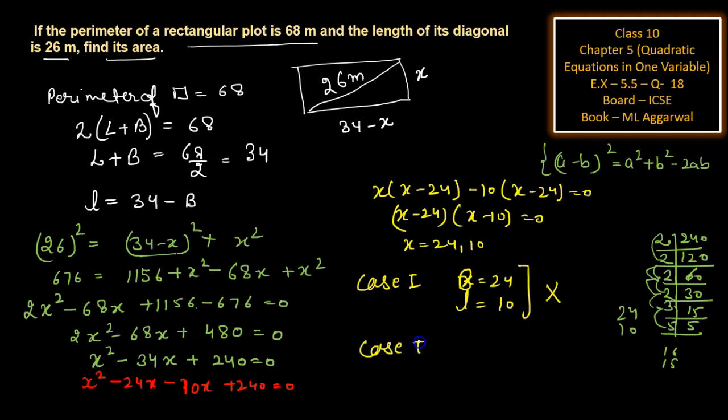In the second case, breadth is 10 and length is 34 minus 10, which is 24. This is your answer. I hope it's clear to you. Thank you.